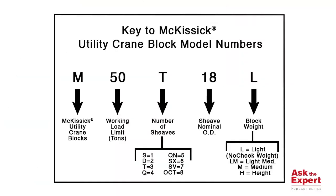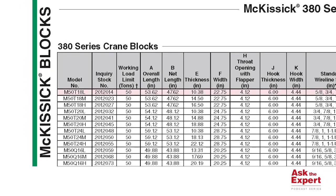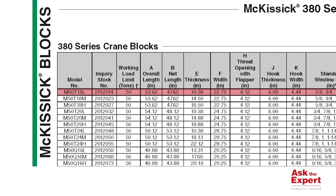For the second question of how to read the model numbers of our blocks published in the catalog and website, let's look at the following chart. For example, a M50T18L will be a McKissick Utility Block, 50 tons capacity, 3 sheaves, P4 triple, 18 inch diameter sheaves, lightweight. The generic part number that will show in the website or the catalog will be 2012014.